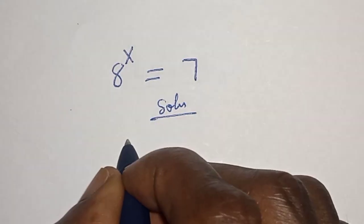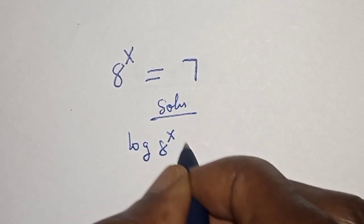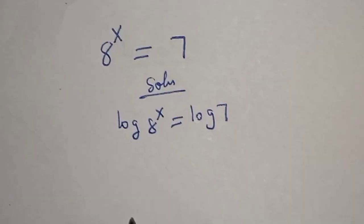Let's take the log of both sides. Log 8 raised to power x is equal to log 7, and this is x log 8 is equal to log 7.